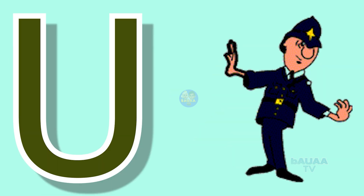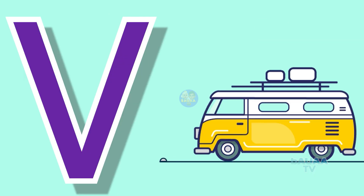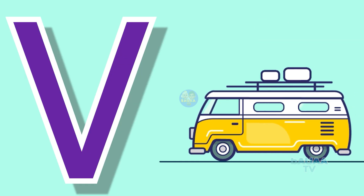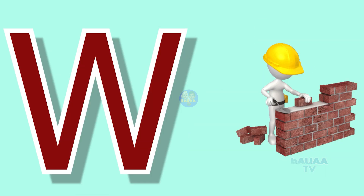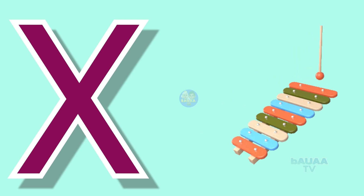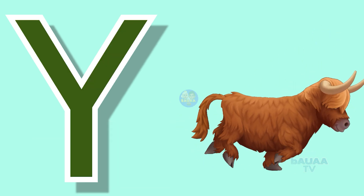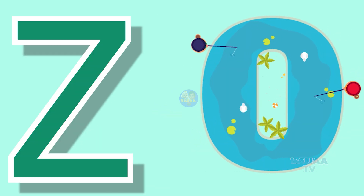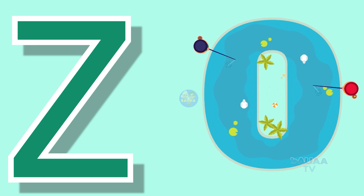U for uniform, V for wolf, W for wolf, X for xylophone, Y for yard, Z for zero.